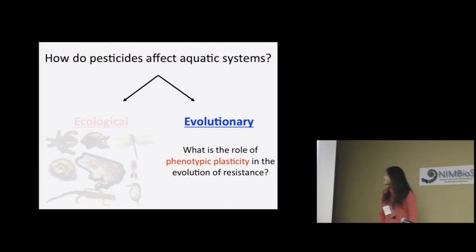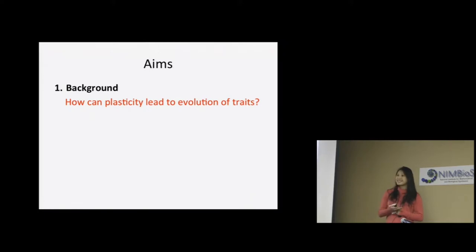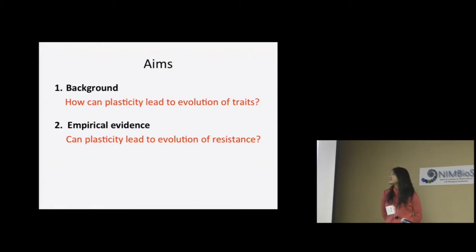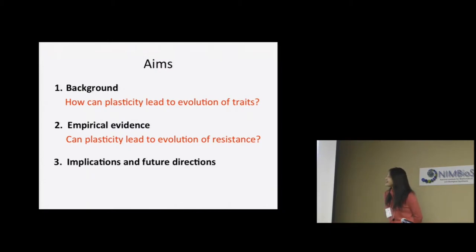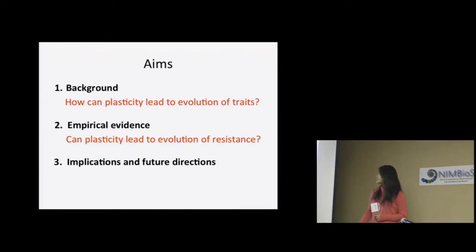Specifically, I want to talk about my work on phenotypic plasticity in the evolution of resistance. This talk is broken into three sections. First, some background: what does theory tell us about plasticity and how can it lead to the evolution of traits? Then, some empirical evidence: can plasticity specifically lead to the evolution of resistance? And finally, I'll discuss important implications and future directions we need to pursue.